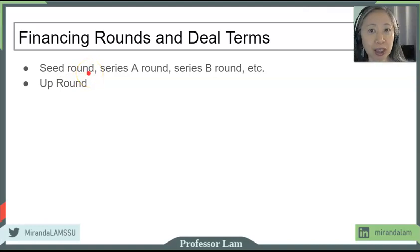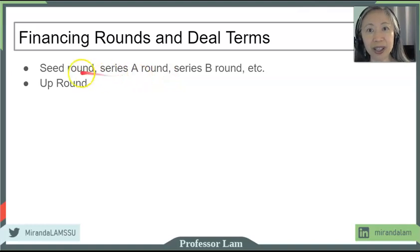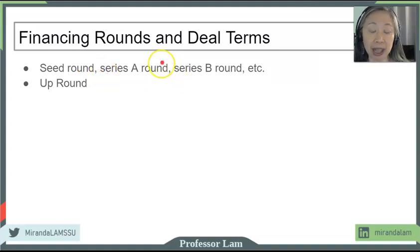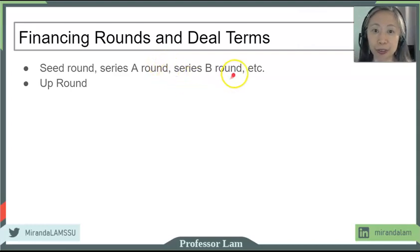A new market value is established between each round — a market value is established at seed round, and then we don't really know how much the firm is worth from a market value sense until it goes for a Series A. And then it will be unknown again until the firm goes for a Series B, and so forth.